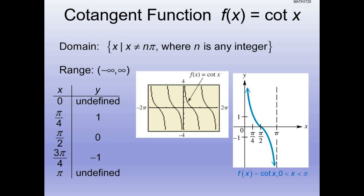That's why the domain is the set of x where x cannot equal n*pi. If n is 0: zero times pi is 0 — sine of 0 is zero. If n is 1: pi times 1 is pi — sine of pi is zero. If n is 2: 2 times pi — sine of 2 pi is zero, and so on. We create a table of inputs and outputs for x and y. Notice that cotangent starts at positive infinity and works down to negative infinity — the exact opposite of tangent.